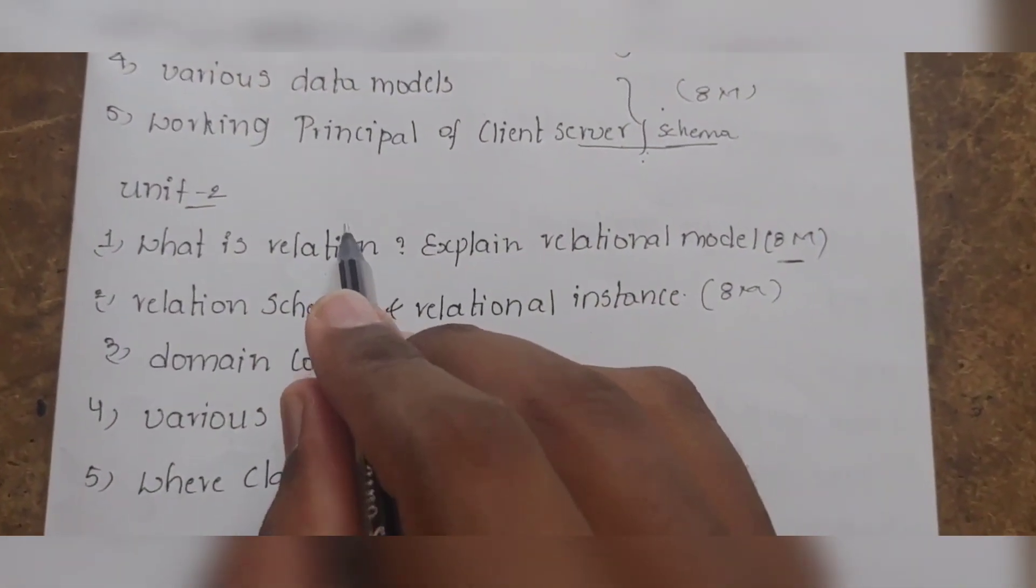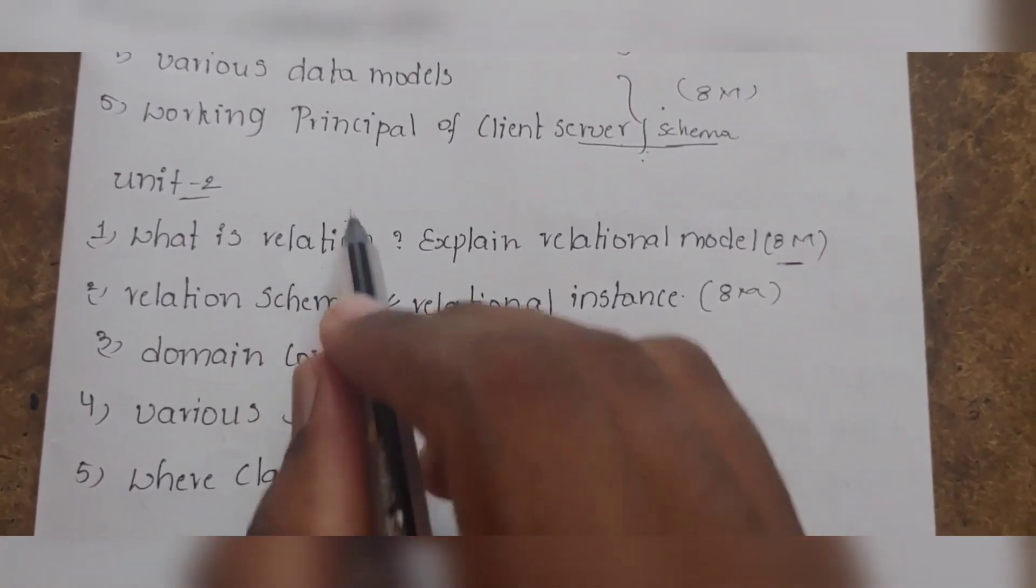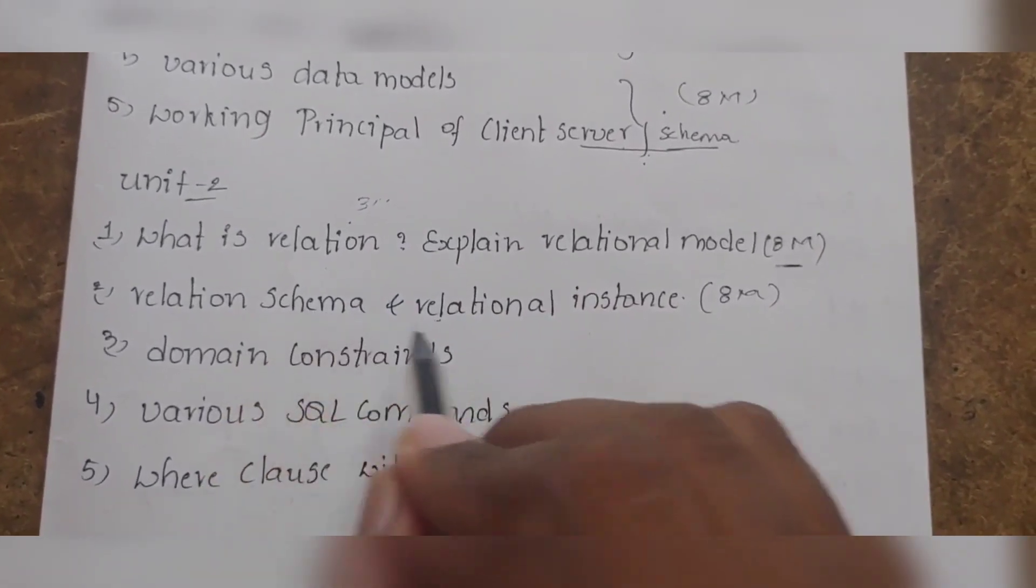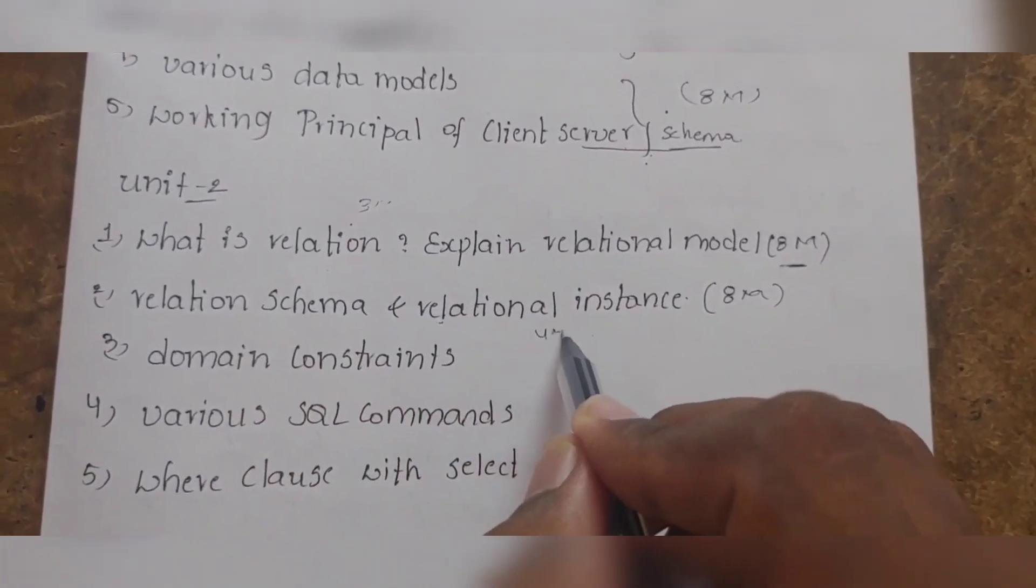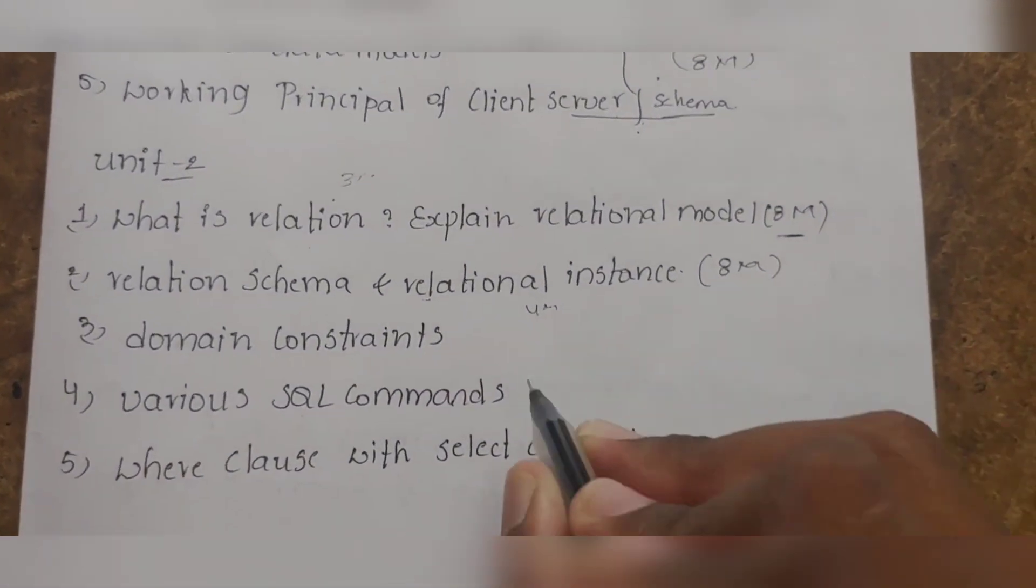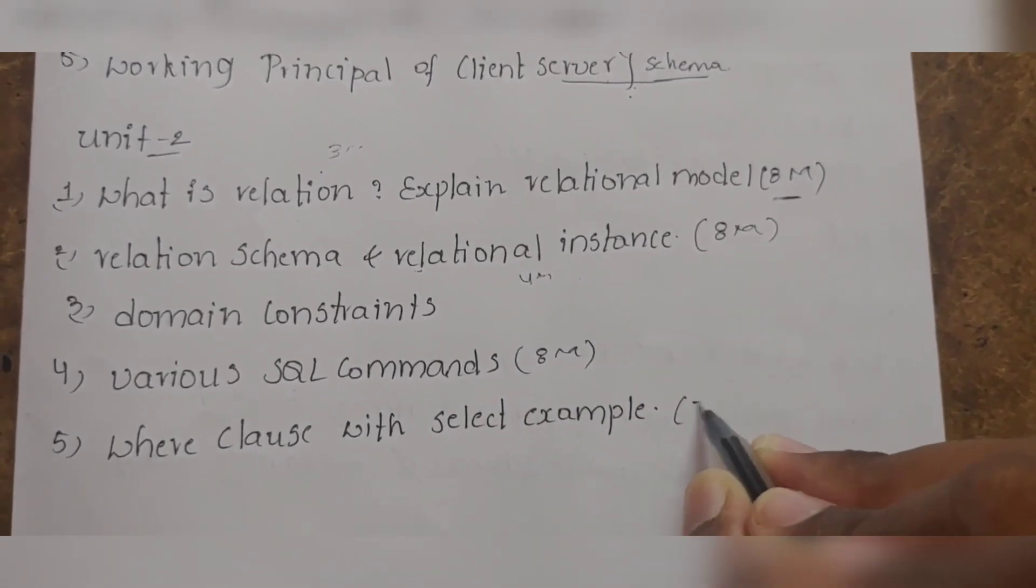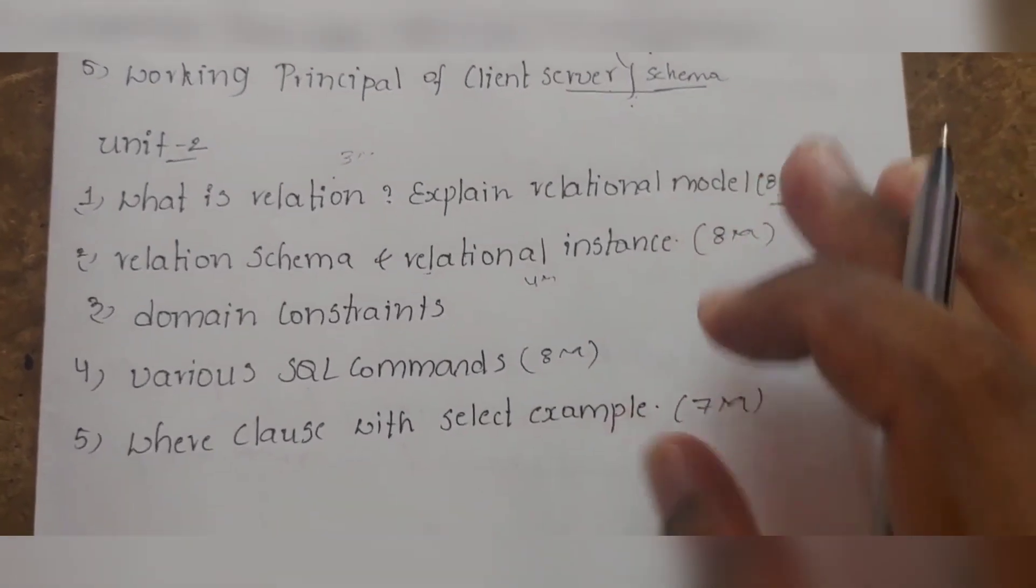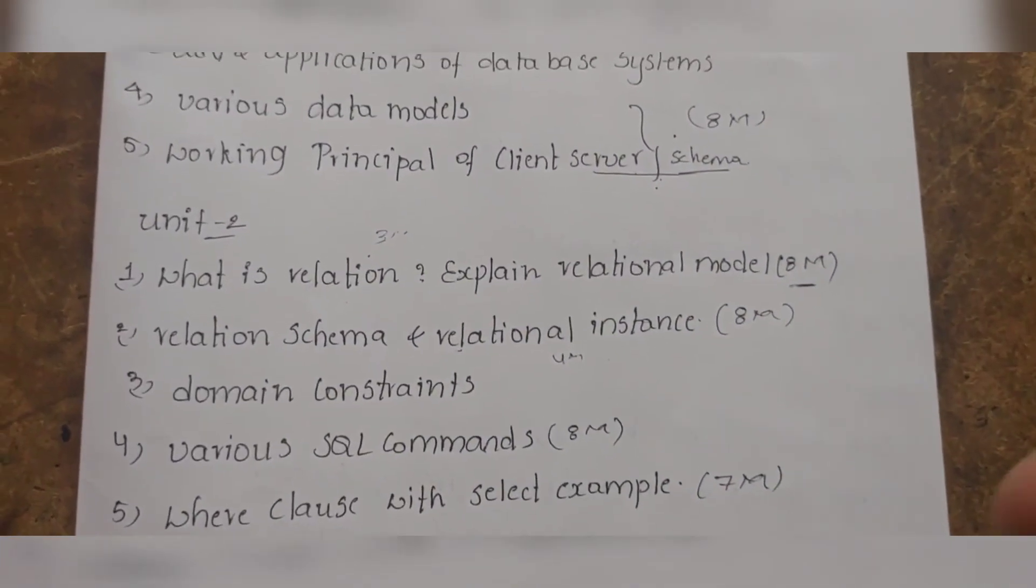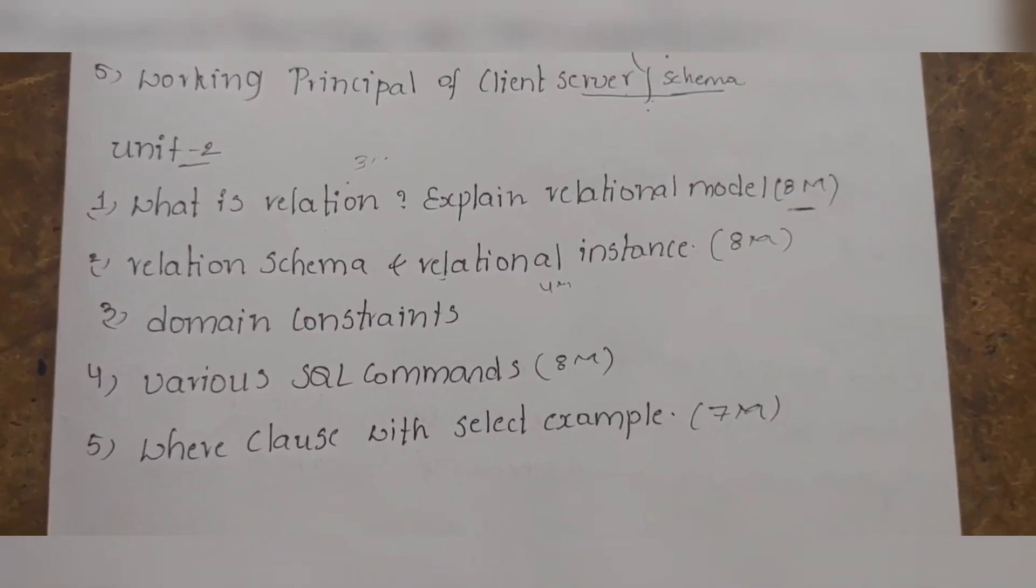Next, what is domain constraint? Then there's the schematic diagram - we will have some architecture diagrams. In detail, we'll explain the architecture, so practice the diagram. Relational schema is 4 marks. What is relational instance is another question. SQL commands 8 marks - where clause with selected examples. This is important for unit 2.